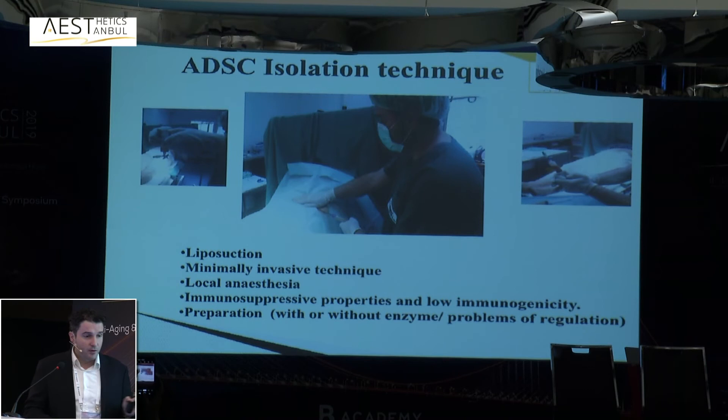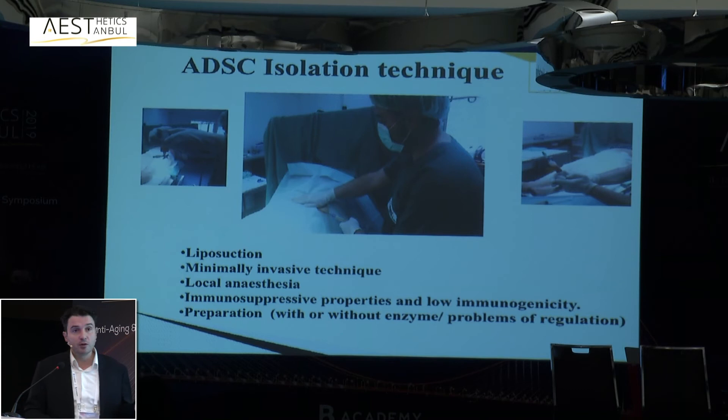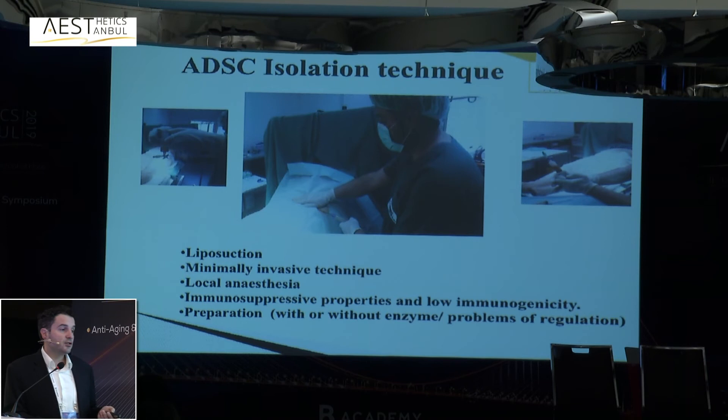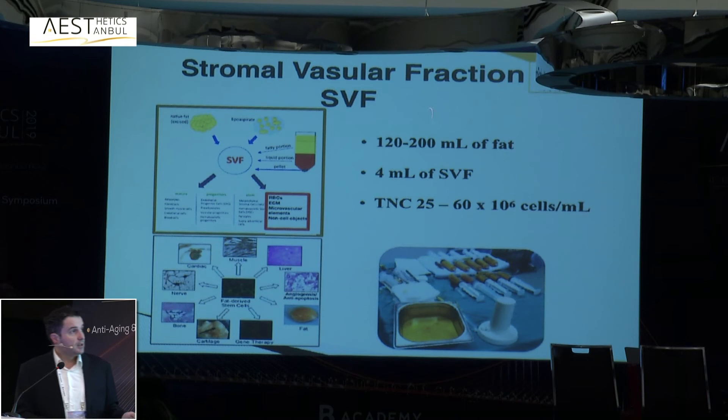From fat tissue, we obtain stromal vascular fraction using liposuction followed by mechanical or enzymatic digestion. The end product is not just stem cells — it is a mixture of stem cells with many other cells and proteins. We believe this mixture is what makes it potent. In our cases we take up to 200 mL; total nucleated cell viability is around 80%.